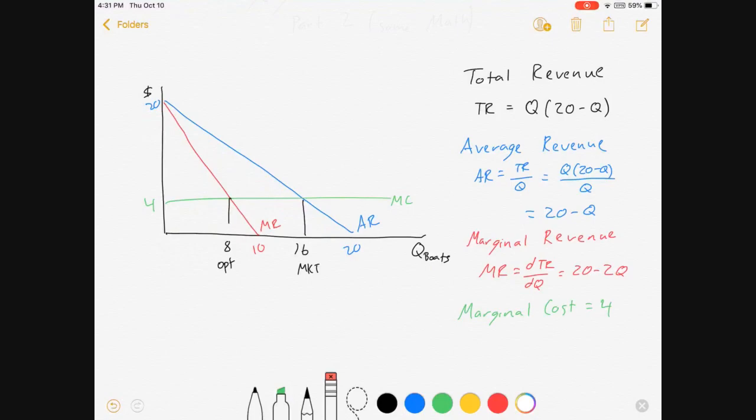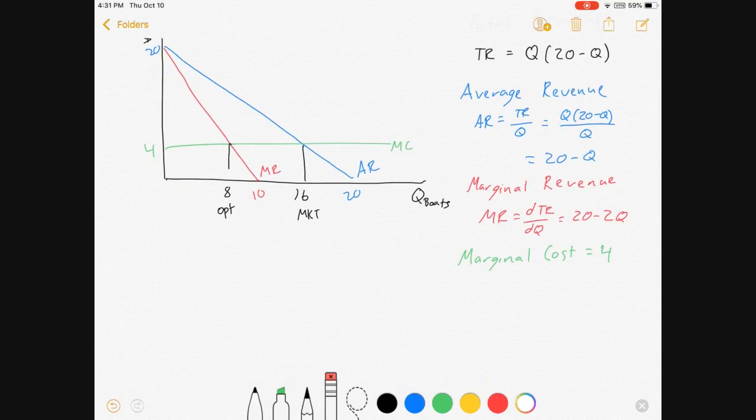So something else we could be interested in, we know our optimal, we know our market quantity. If we want to use policy to bring ourselves to the optimal amount, we have a couple of options.